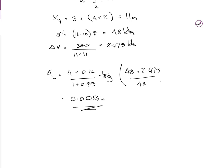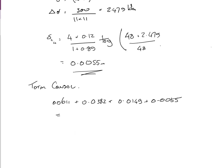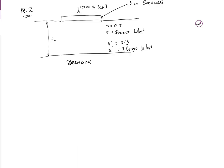Total consolidation equals the sum of all four layers: 0.0611 + 0.0382 + 0.0149 + 0.0055 = 0.11975 meters, which is approximately 120 millimeters. That's the answer to question one.